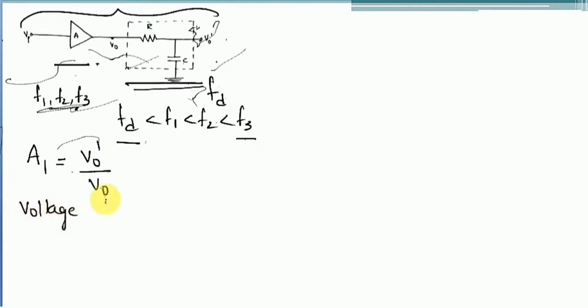Now we have to find the overall gain of this circuit. First, we will find the gain of this external compensated network. The gain is the ratio of output voltage to input voltage. We assume the external compensated network gain is A1, equal to V0' divided by V0, where V0' is the output voltage and V0 is the input to the RC network — the output of the uncompensated network. We find this ratio using the voltage division rule.